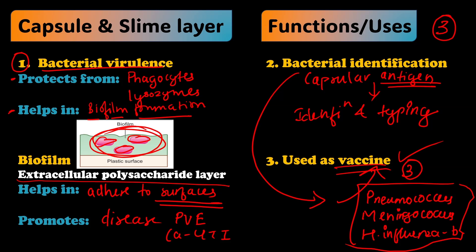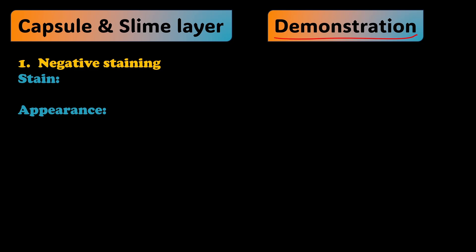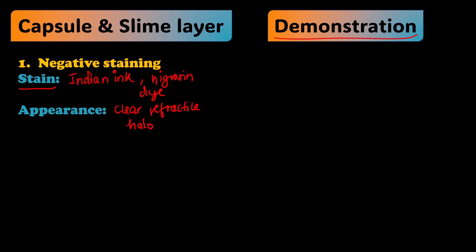The last subtopic is demonstration — how do we demonstrate the capsule or slime layer? The first method is negative staining. We can use Indian ink or Nigrosin dye for this purpose. When you use a negative stain, the appearance you will see is a clear refractile halo surrounding the bacterium. There are nearly four methods in total through which we can demonstrate the capsule.